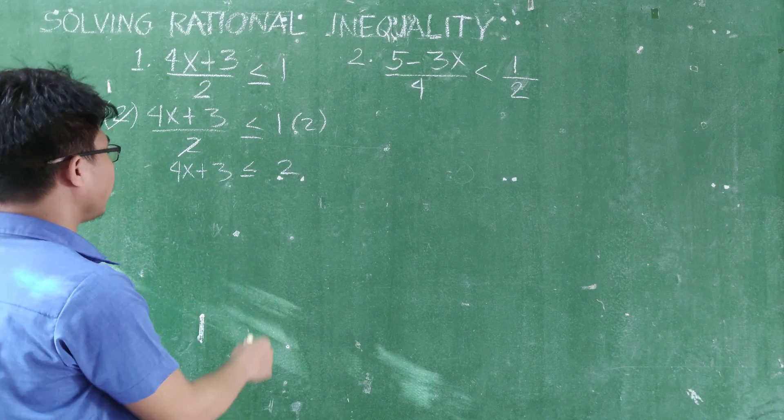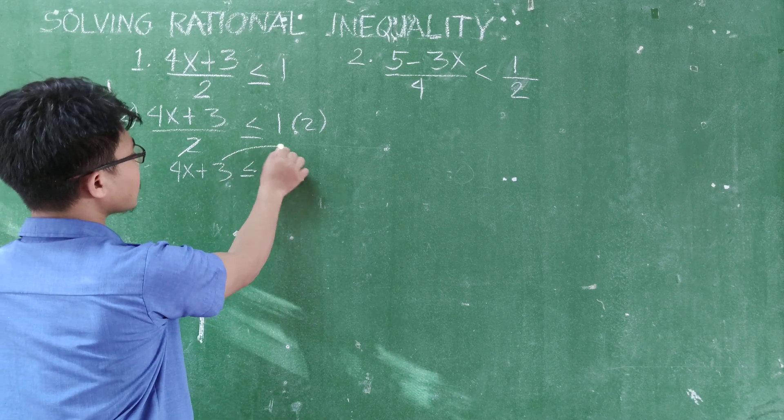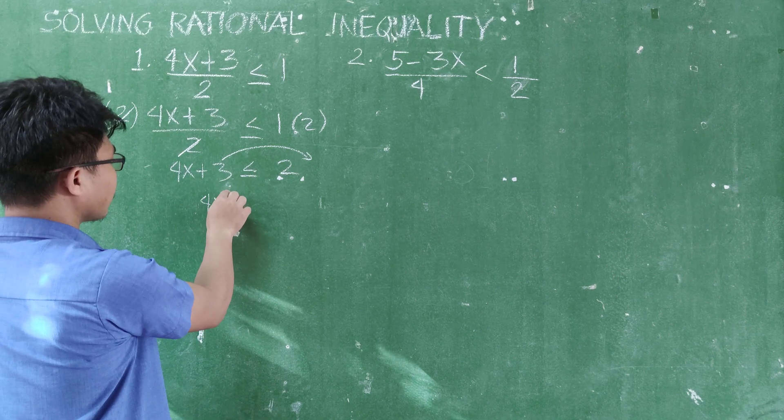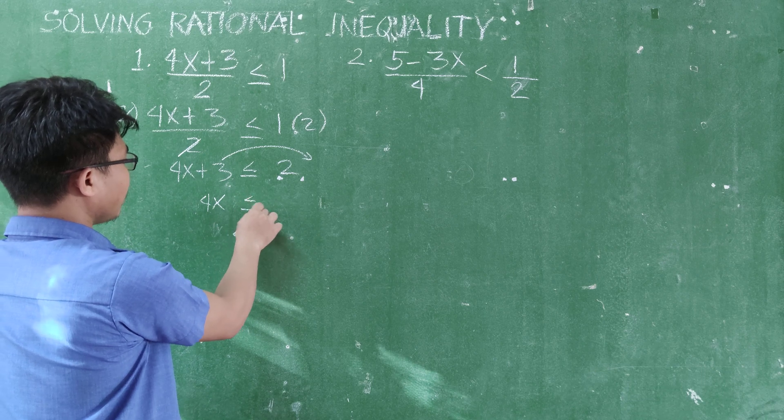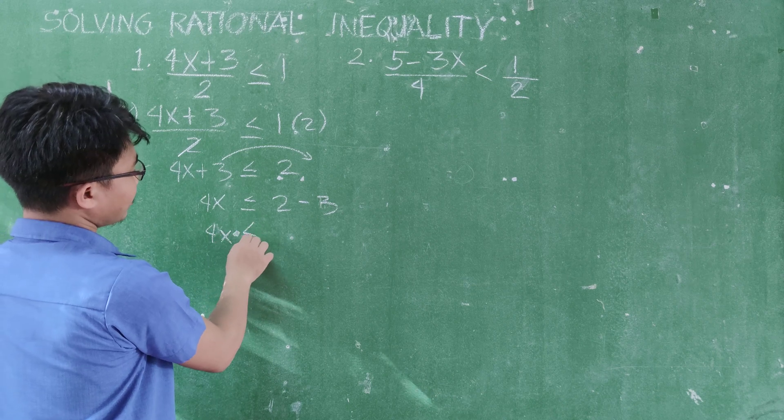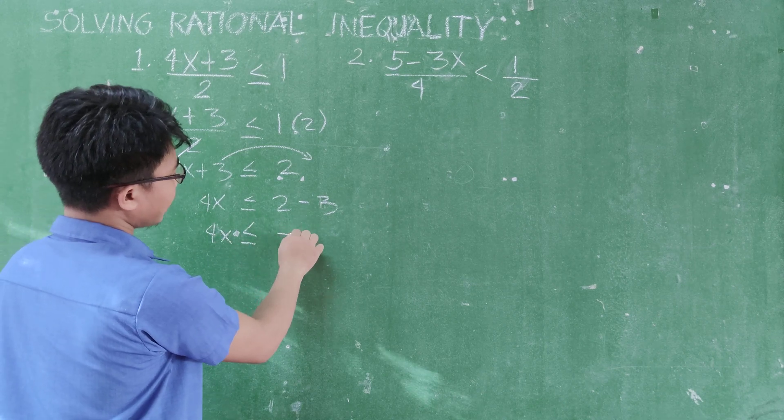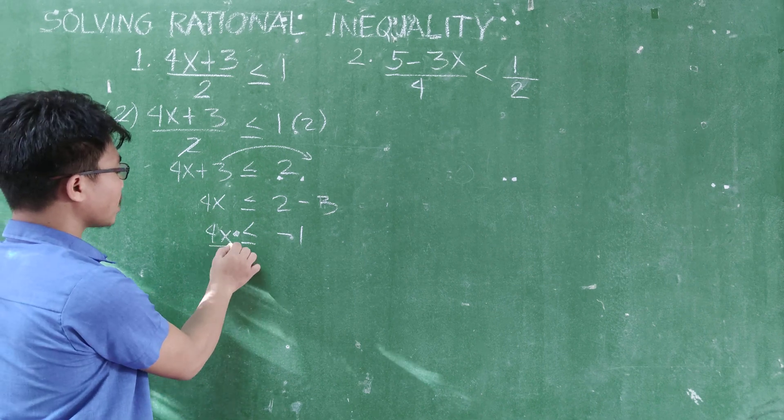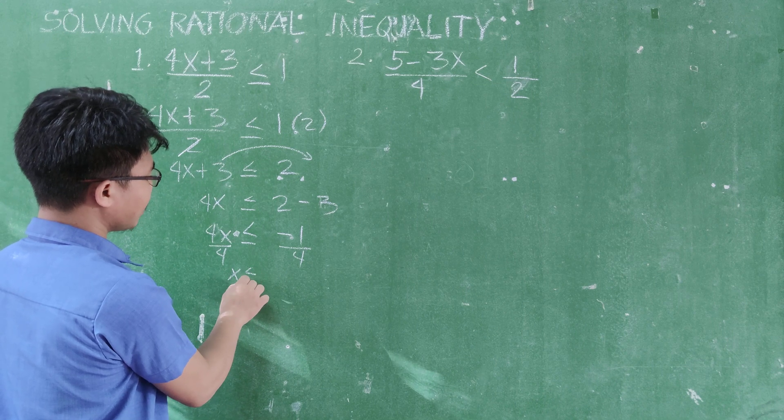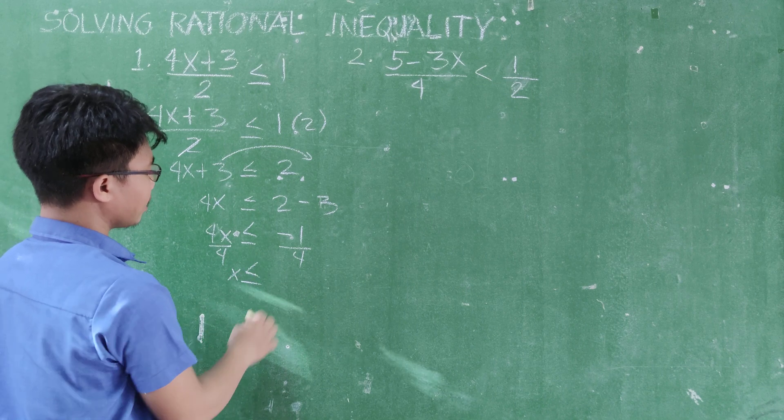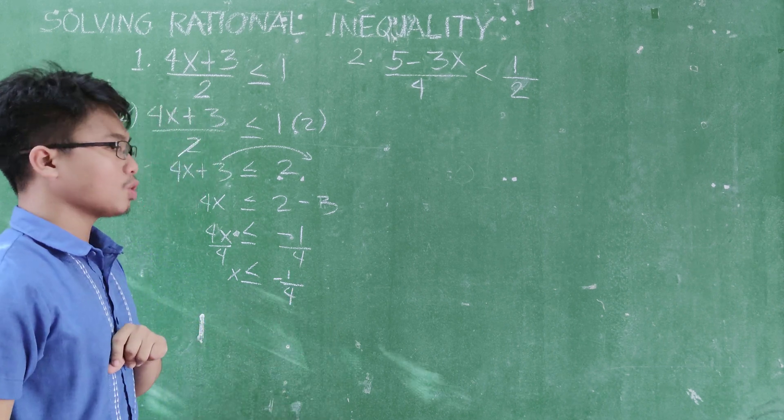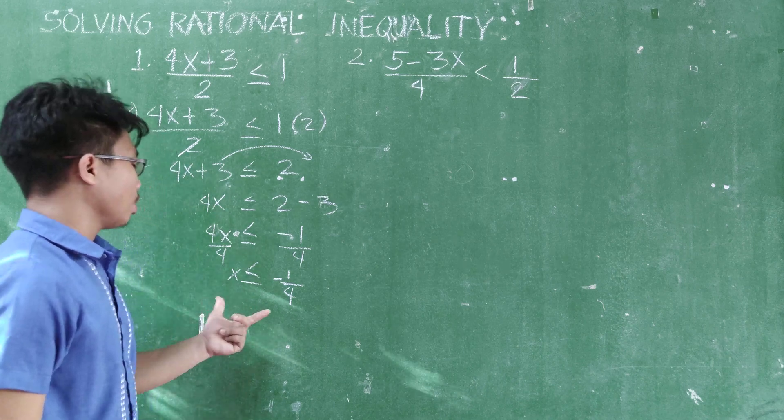Afterwards, continue simplifying. We can transpose this 3 to the right side. So what remains here is 4x less than or equal to 2 minus 3. Continue. 4x less than or equal to 2 minus 3, that is negative 1. So solve for x. Divide both sides by 4. So your x is less than or equal to negative 1/4. So that is your answer. This is already a correct answer.